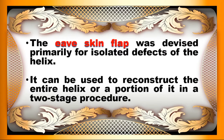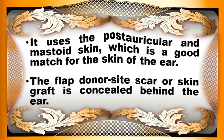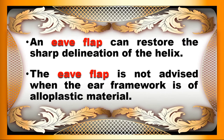Today, I am presenting a skin flap devised primarily for isolated defects of the helix. It can be used to reconstruct the entire helix or a portion of it in a two-stage procedure — the EVE skin flap. This flap uses the post-auricular and mastoid skin, which is a good match for the skin of the ear, and the donor site scar or skin graft is concealed behind the ear. An EVE flap can restore the sharp delineation of the helix. However, this flap is not advised when the ear framework is of alloplastic material.